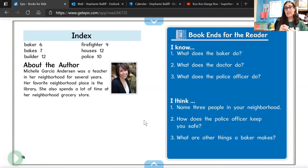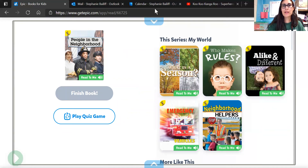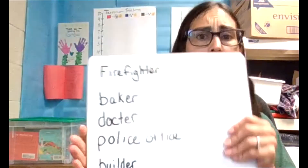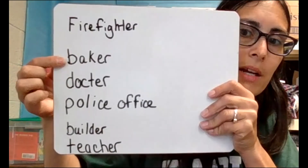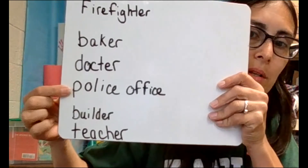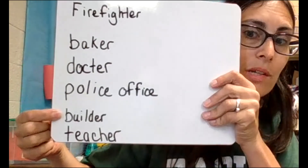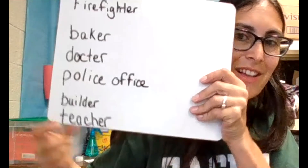All right, we've got quite the list already started. Look at our list of jobs: firefighter, doctor, police officer, builder, and teacher. Can you think of other careers or jobs you might see? Talk about it with your grown-up after your meeting today, and you can even go for a walk and look at different things around your neighborhood. But that's all I had for you today. Bye!